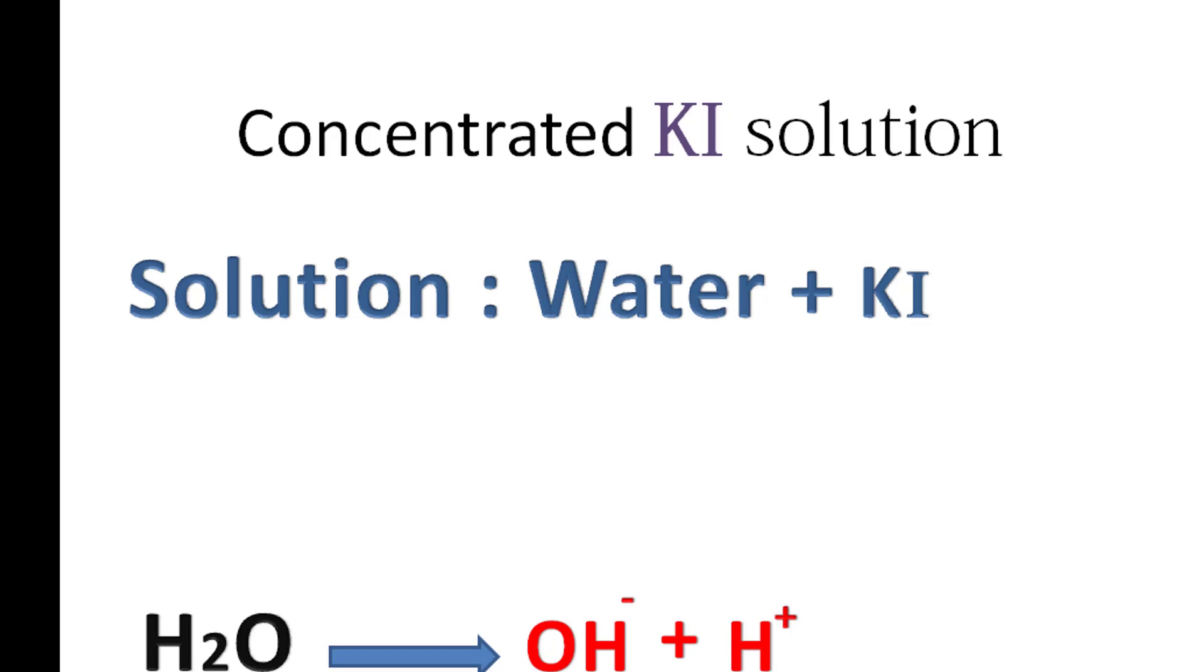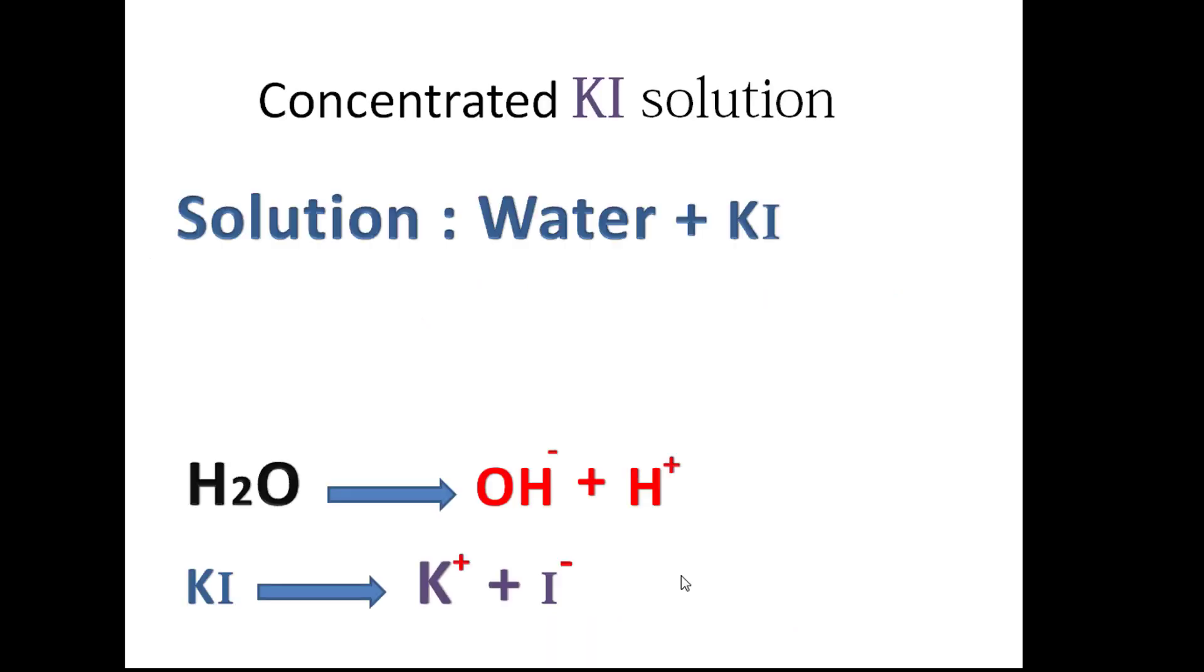KI completely dissolved in water gives us K+ and I-. So when we put them in an electrolysis cell, we got four types of ions.